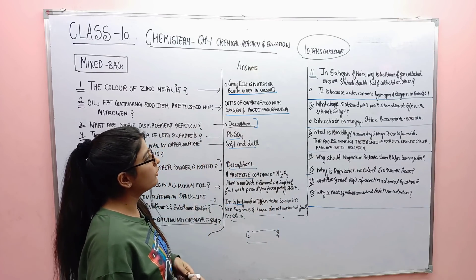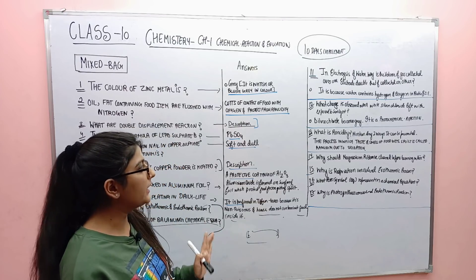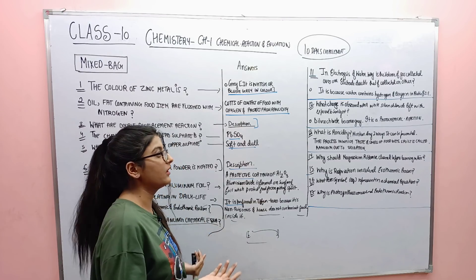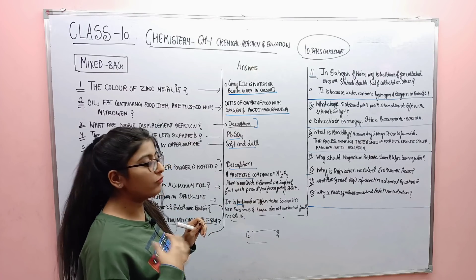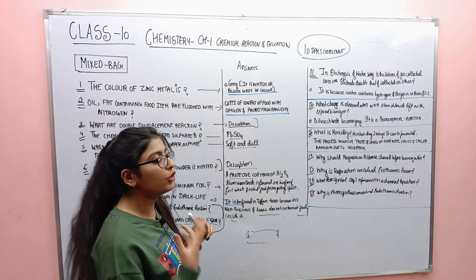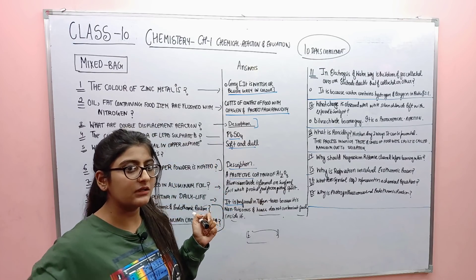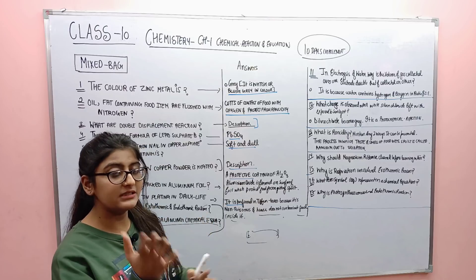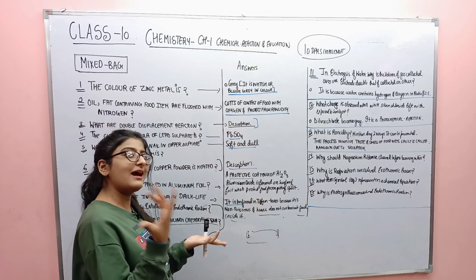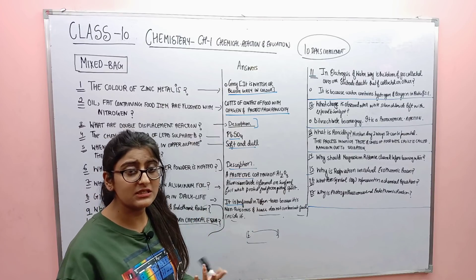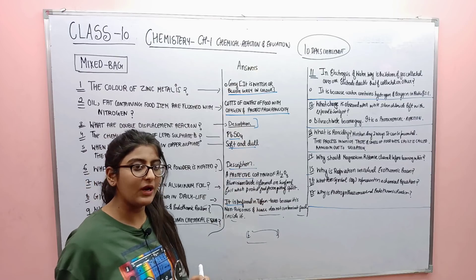The 12th question is written on the board: what change is observed when white silver chloride is left exposed to sunlight? Silver chloride turns grey. What kind of reaction is this? It is a photochemical reaction. So: change in colour, change in state — these indicate a photochemical reaction.